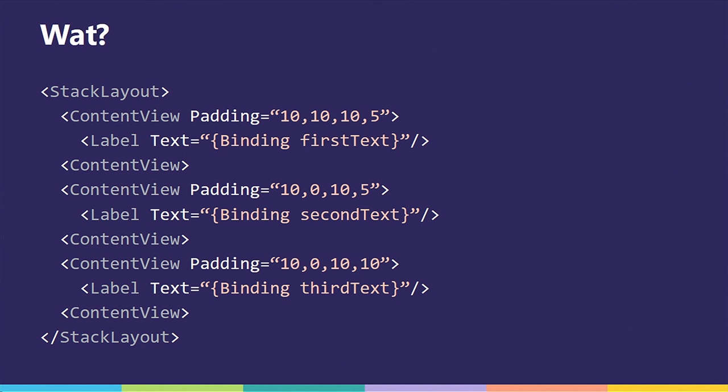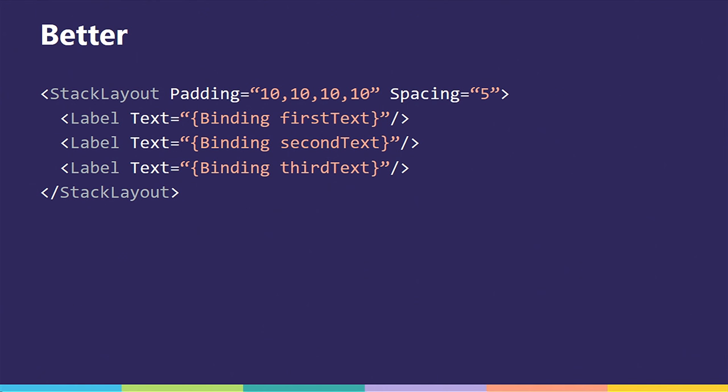Here's a sample I pulled out of a user's app. They packed everything into a content view for no real gain because they weren't aware of the power of the layout system. What they should have done looks more like this — it produces the exact same layout, removes three views and one level of hierarchy, using just the padding property on the stack layout itself. Being aware of the power of the layout system is very important because you can reduce nesting, which really improves overall performance.